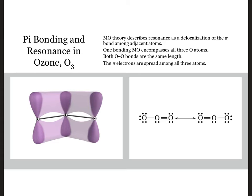MO theory describes resonance as the delocalization of the pi bond between adjacent atoms. So in the case of ozone, one bonding MO encompasses all three oxygen atoms and both oxygen-oxygen bonds are the same length.